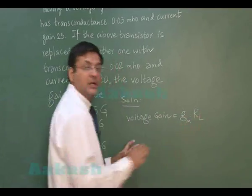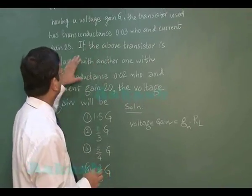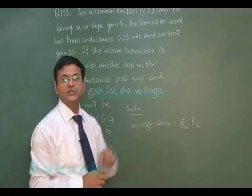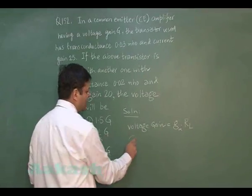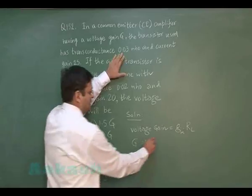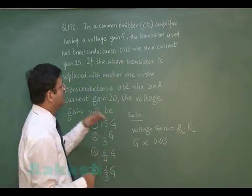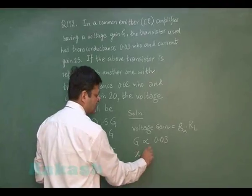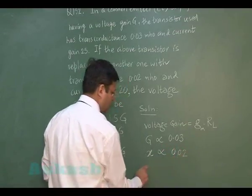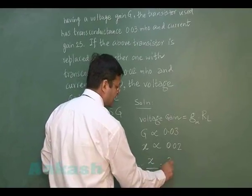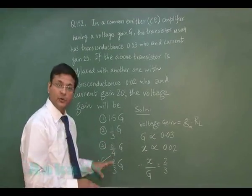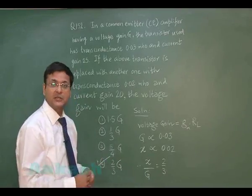The current gains of 25 and 20 are not relevant here. Only the transconductance matters, since voltage gain is directly proportional to gm. So G ∝ 0.03 and x ∝ 0.02. Therefore x/G = 2/3, giving x = 2G/3. The most appropriate answer is the fourth option: 2G/3.